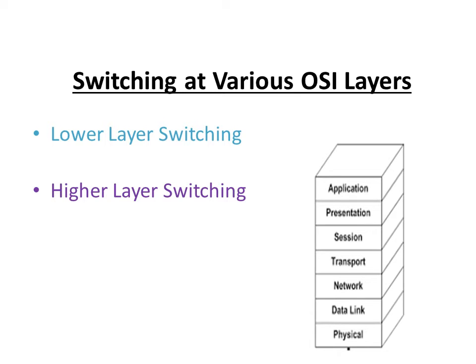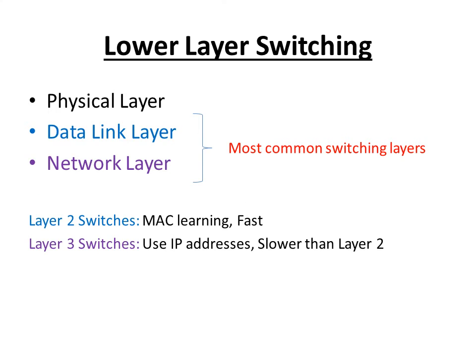Next is switching at various OSI layers, covering lower layer switching and higher layer switching. Lower layer switching includes the physical layer, data link layer, and network layer. The second and third layers are the most common switching layers. Layer 2 switches operate using MAC addresses, do not look at layer 3 or any other layer for additional information, and are thus very fast because their only job is sorting MAC addresses.